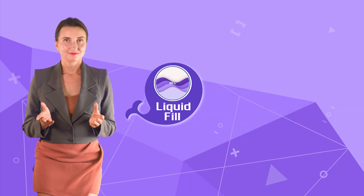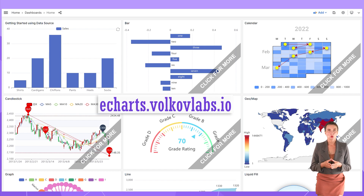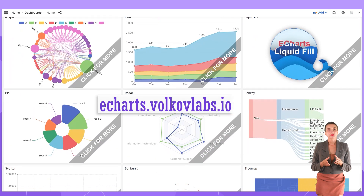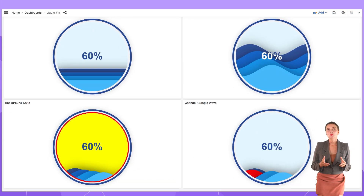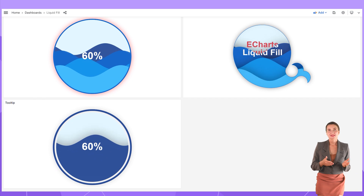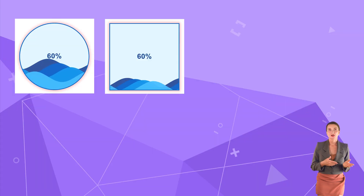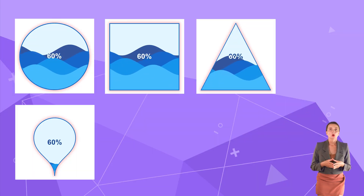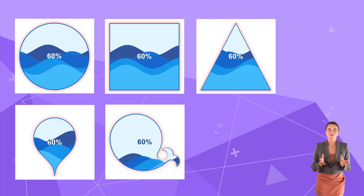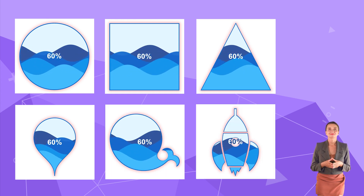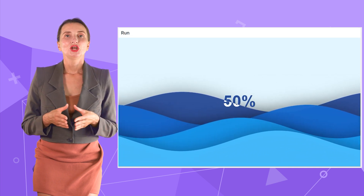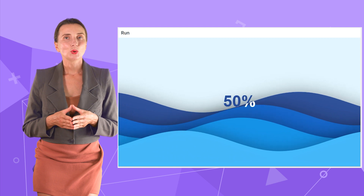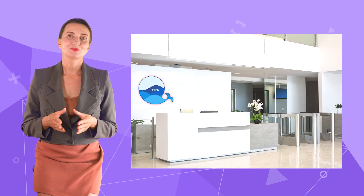Liquid Fill extension: to learn what this extension can do, go to eCharts.volkoflabs.io, scroll down, and click on the Liquid Fill group. This visualization shows moving waves. The wave can move inside any shape — for instance, a circle, square, triangle, pin, or your custom SVG image. I have a fish and a bracket here. The moving wave visualization is calming and stylish — it could be an intriguing addition to your home page or even a wall in a reception area.